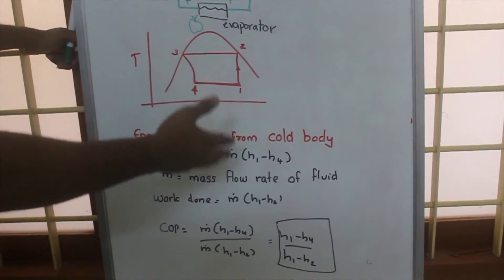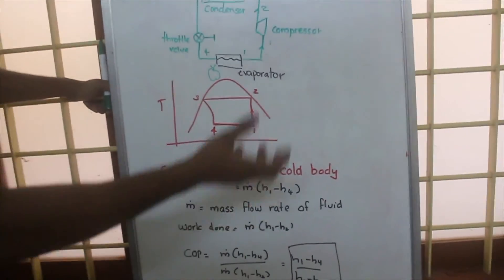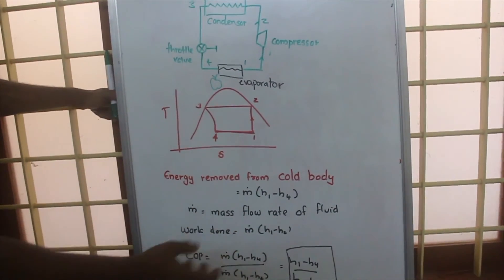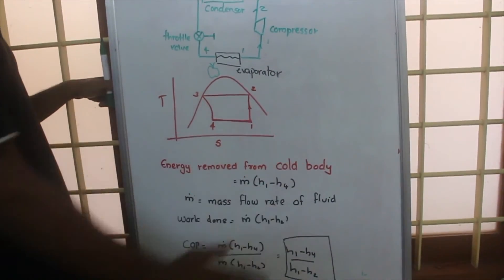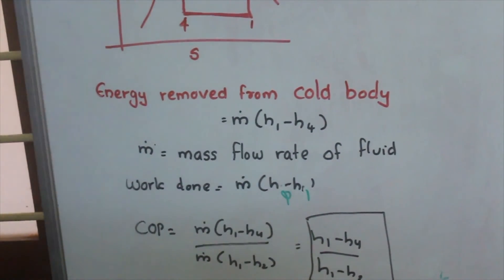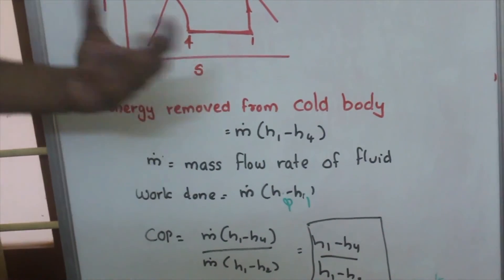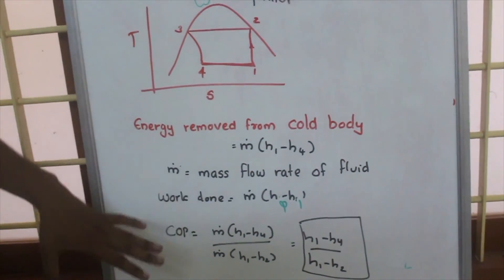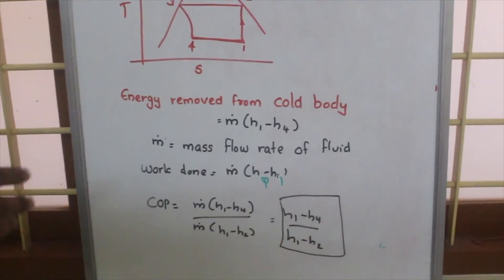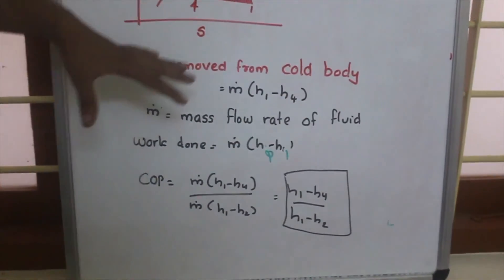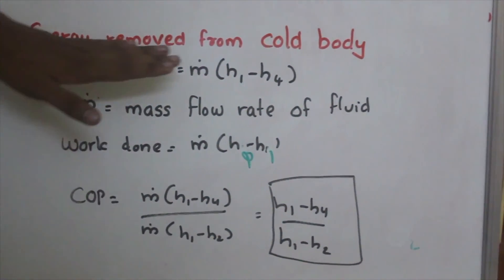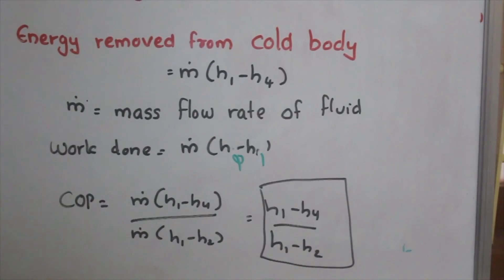Now we know the energy removed from the cold body, and also we know the work that is supplied by means of some electric supply to remove that much heat. So the coefficient of performance is the ratio of the energy removed from the cold body to the work done.